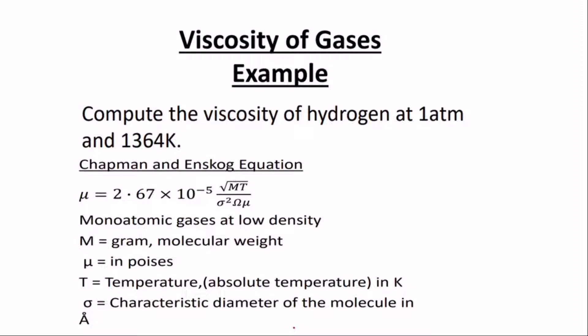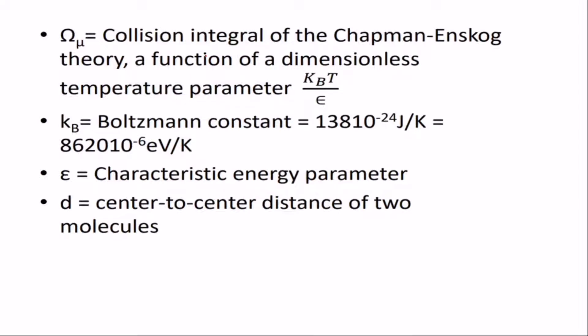The characteristic diameter of the molecule is in Ångströms. You need to know all these parameters before solving for the viscosity of any gas. This formula is normally given in table form, so you need to know the units. The collision integral is the main challenge when solving for the viscosity of gases using Chapman-Enskog theory.